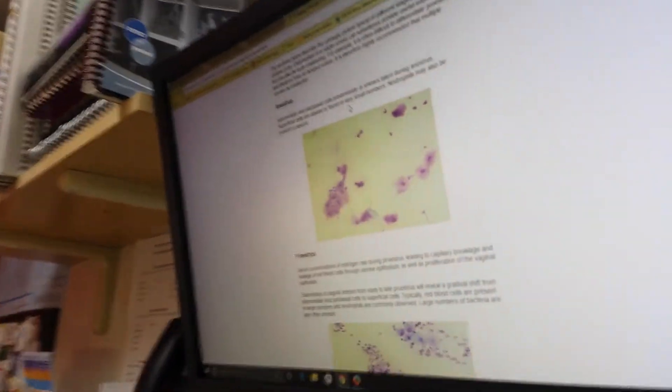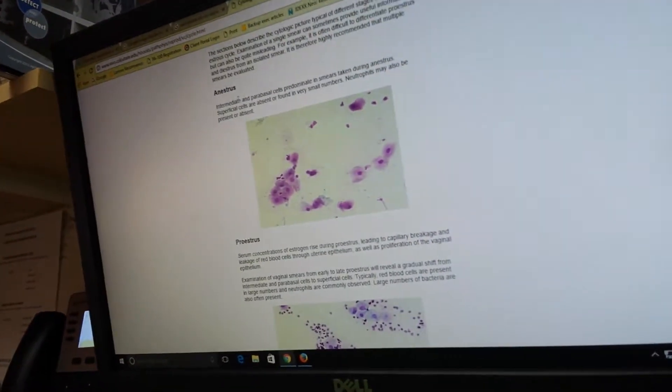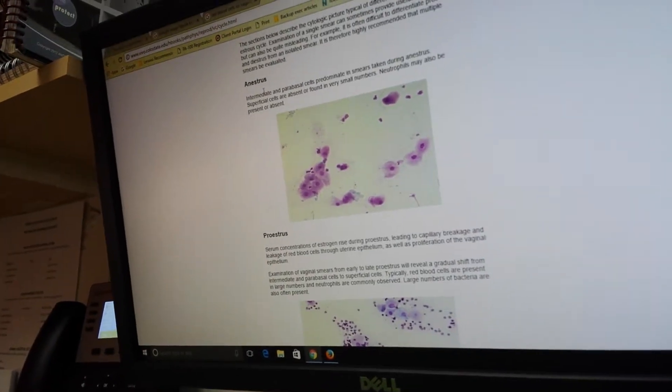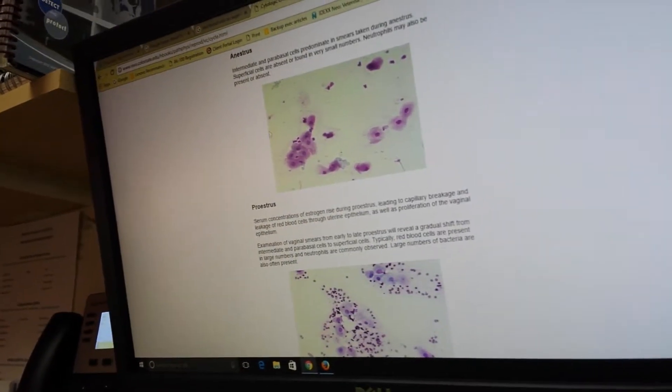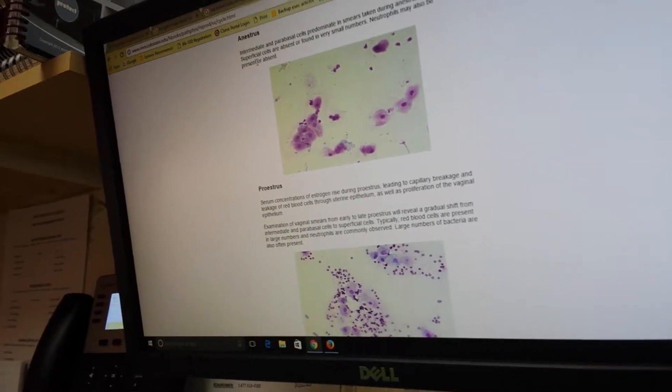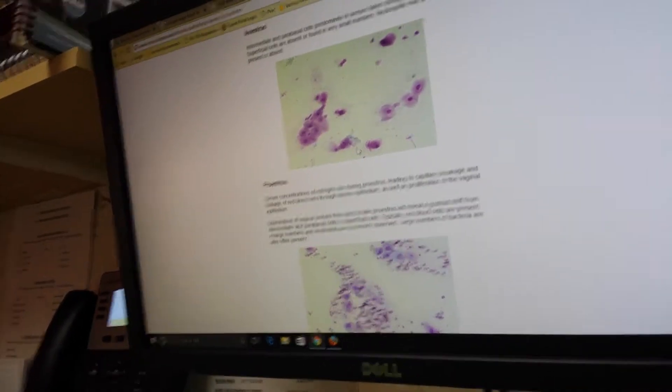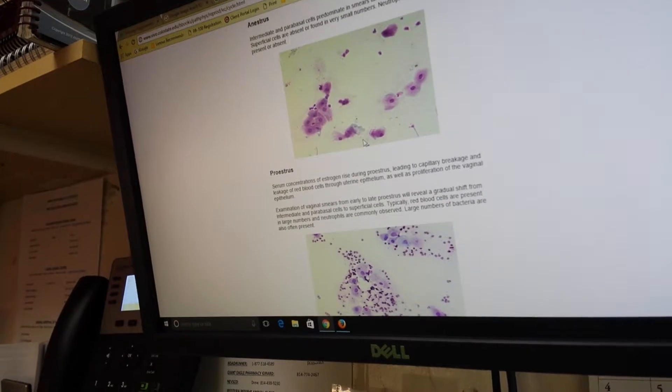And then as for the stages of estrus, the first stage of estrus is the anestrus. So you would just see a few superficial cells, you might have a few neutrophils as well, but as you can see there's not a whole lot going on in that slide.